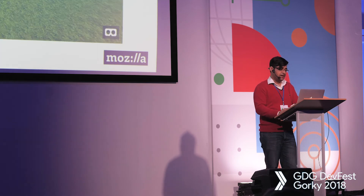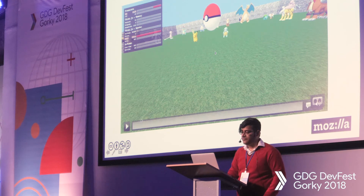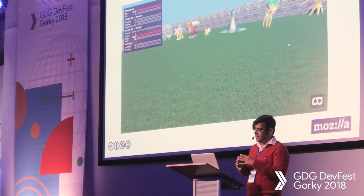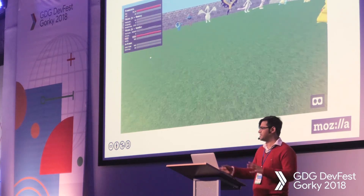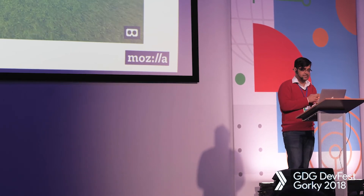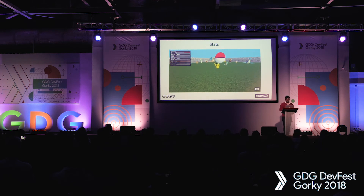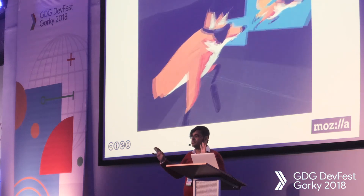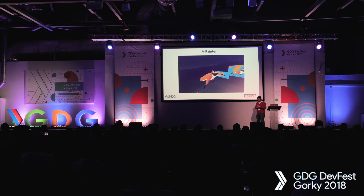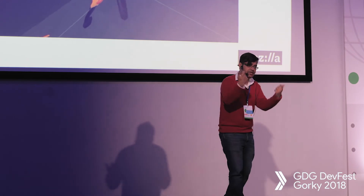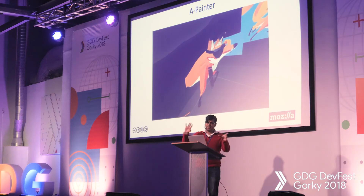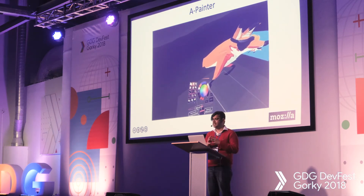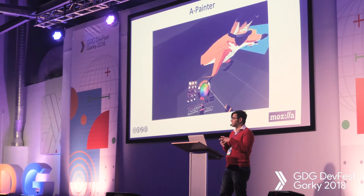Another important aspect while building these applications is performance. A-Frame allows you to monitor your application's stats by adding the stats attribute to the A-Scene tag. It monitors different metrics like frames per second, request animation frame, number of textures, programs, geometries, load times, and entities. For WebVR API 1.0, aim for a stable 90 FPS. The Mozilla VR team constructed a 90-plus FPS room-scale Tilt Brush experience in just a few weeks using only A-Frame — demonstrating how powerful A-Frame is.